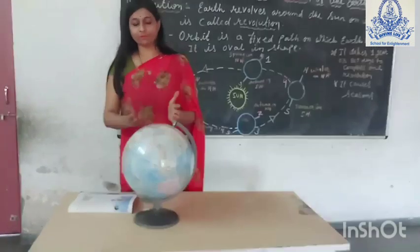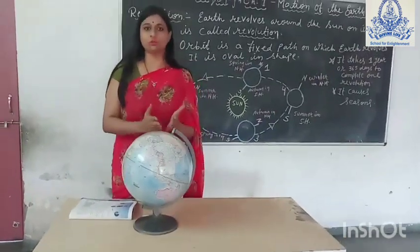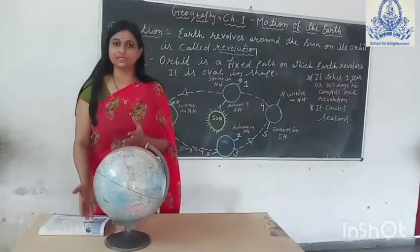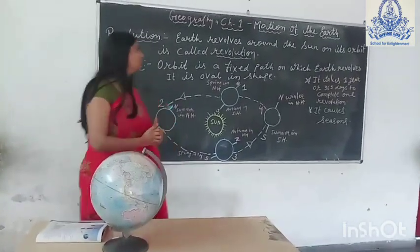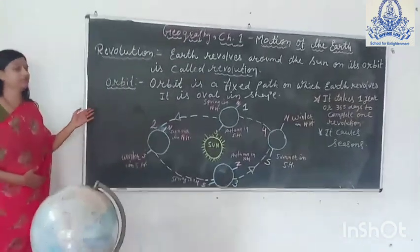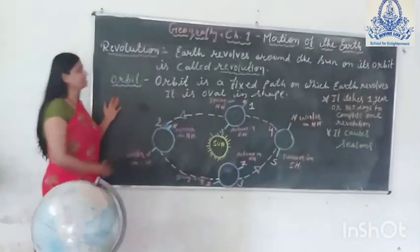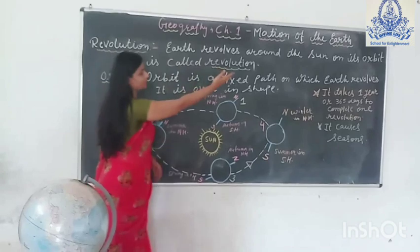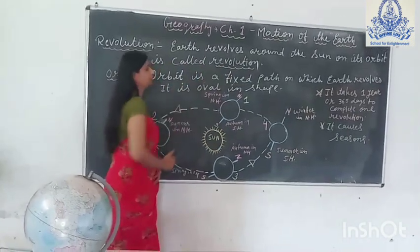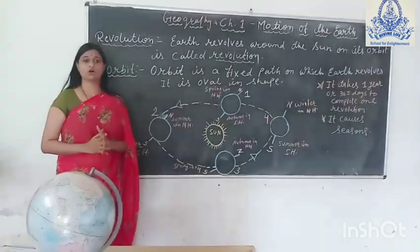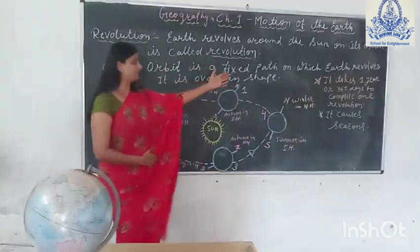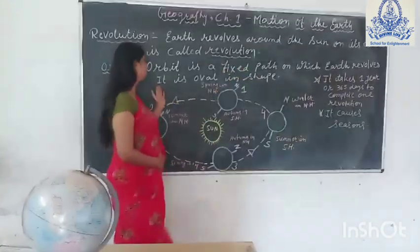Now let us know: what is the North Pole, what is the South Pole, what is the northern hemisphere, what is the southern hemisphere? Now we will talk about revolution. Revolution means the earth revolves around the sun on its orbit. What is an orbit? An orbit is a fixed path on which the earth revolves.